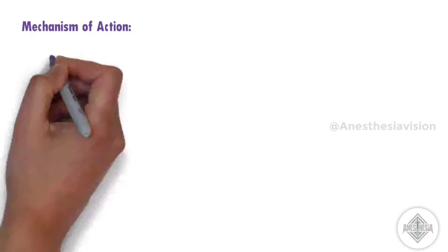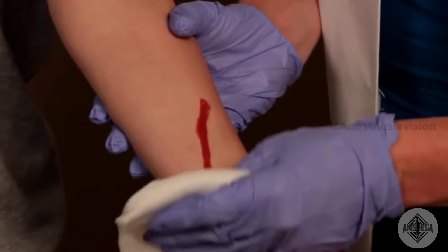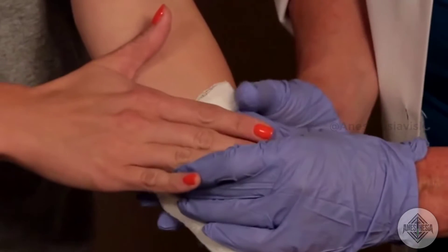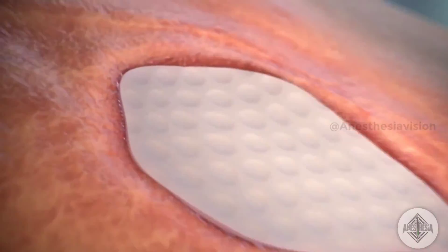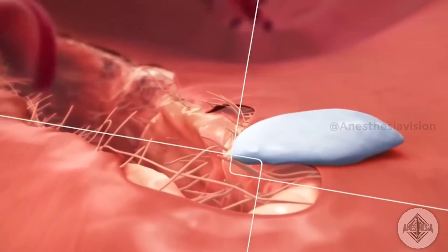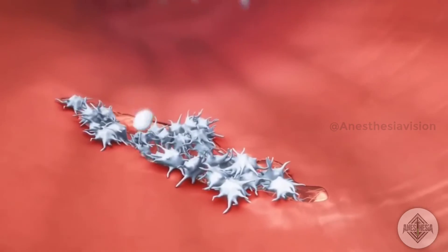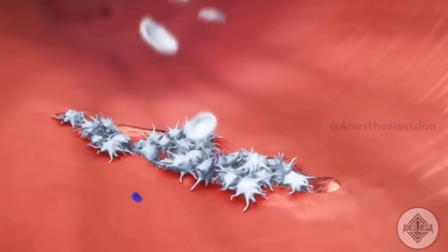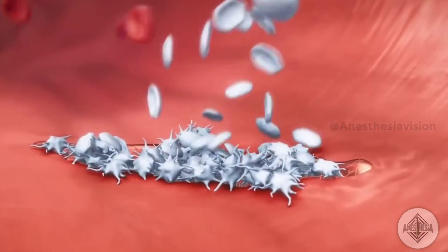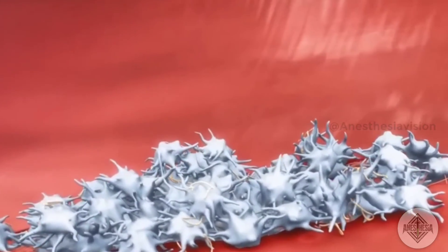Mechanism of action: The primary mechanism of tranexamic acid involves its ability to inhibit fibrinolysis. Let's see how it happens. Imagine you have some injury — a blood vessel is damaged, causing bleeding from the injured site. To stop this, platelets aggregate to form a platelet plug. Then the coagulation cascade is activated, converting fibrinogen into fibrin, which forms a meshwork creating a blood clot.